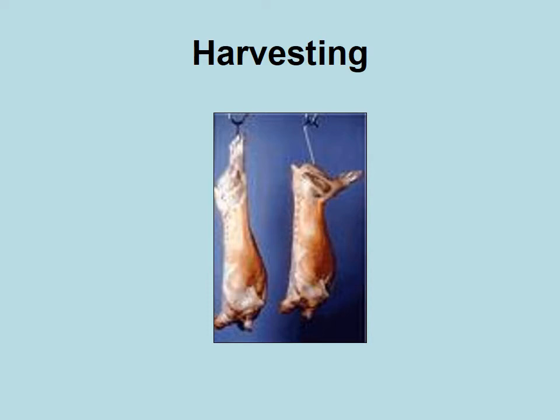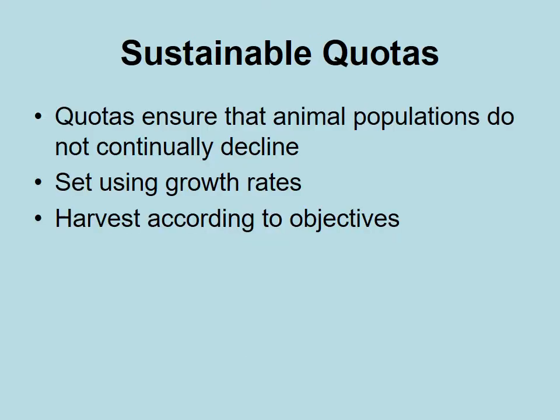When it comes to harvesting, we're dealing with animals that are usually killed, either for meat or for trophy fees. When harvesting animals from a particular reserve, we need to make sure that we develop sustainable quotas for the number of animals removed. If you have a quota that is not sustainable, your population will continue to decrease and you'll end up having the population go locally extinct.